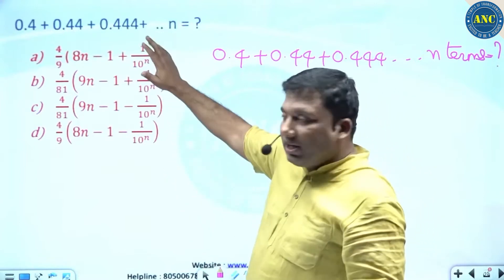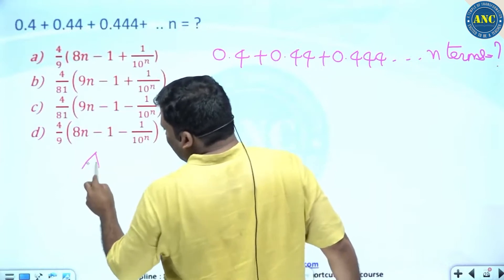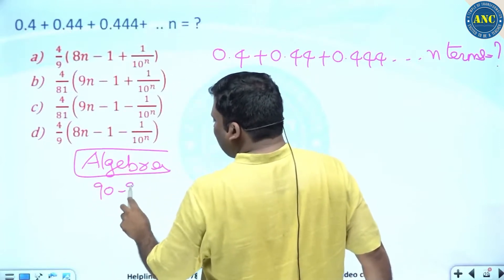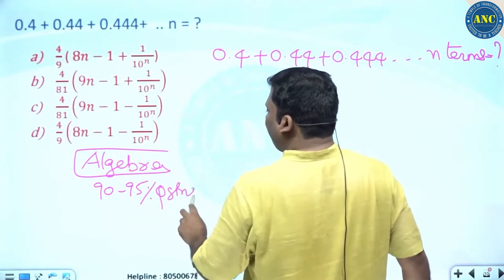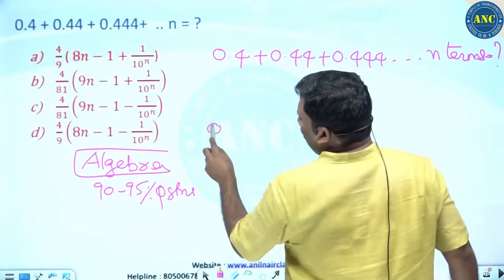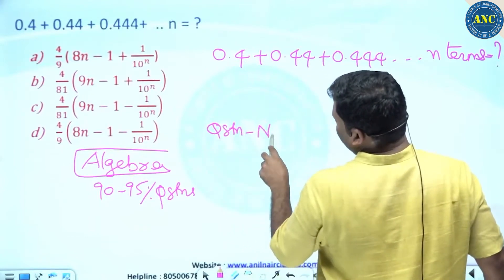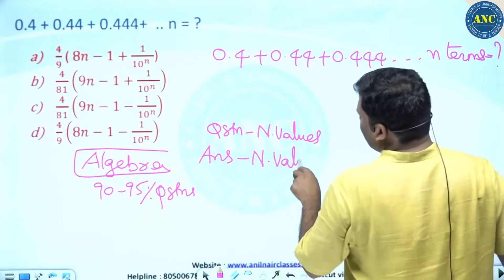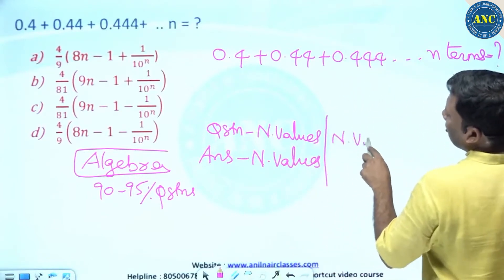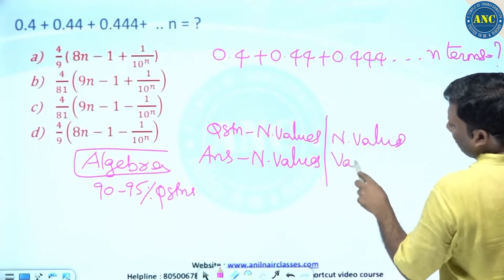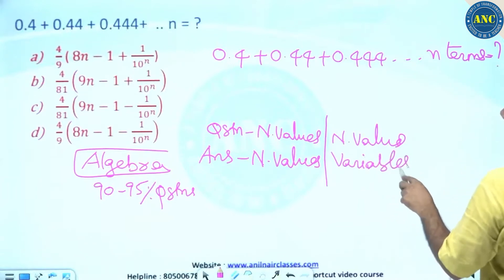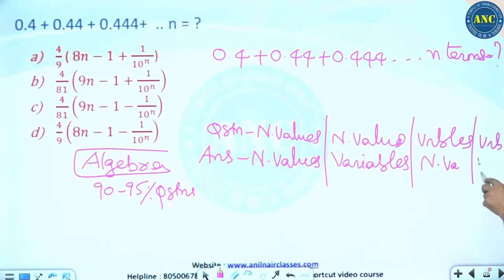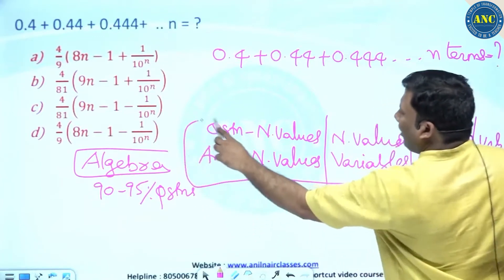Listen carefully. If you get a question from algebra, 90 to 95 percent of the questions fall under these categories: question contains numerical values and answer contains numerical values; question contains numerical values and answer contains variables; question contains variables and answer contains numerical values; question contains variables and answer contains variables. These are the four varieties.